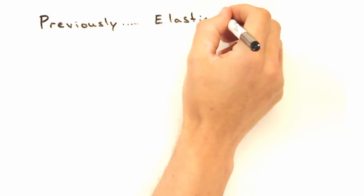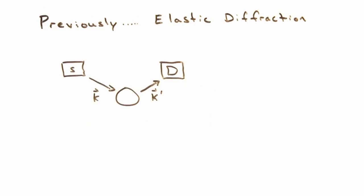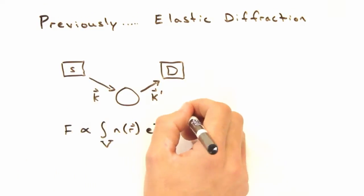So far, we've talked about elastic diffraction and the scattering density, but we ended up with this nasty expression for the amplitude at the detector.